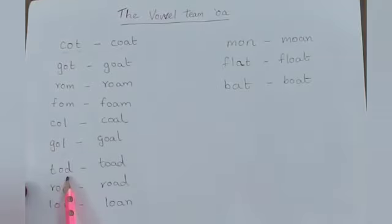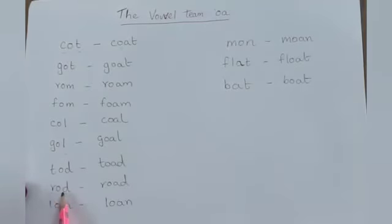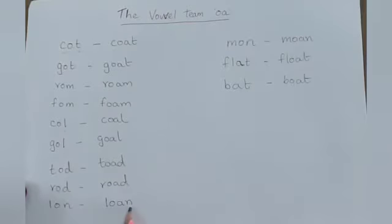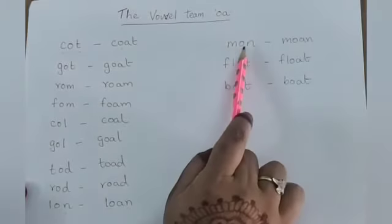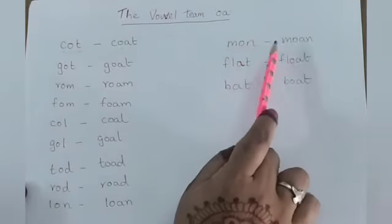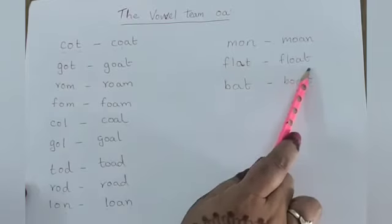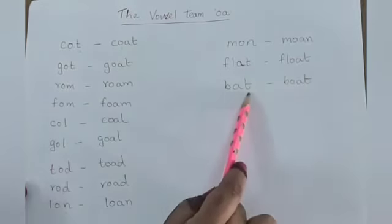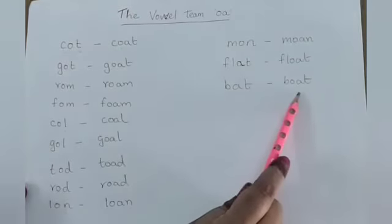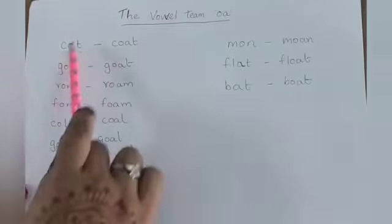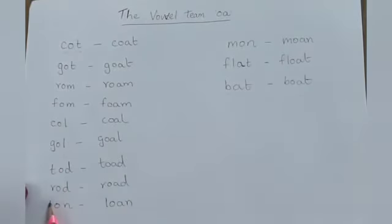T-O-A-D — toad. R-O-A-D — road. L-O-A-N — loan. M-O-A-N — moan. F-L-O-T — float, F-L-O-A-T — float. B-A-T — bat, B-O-A-T — boat. So these are the words with the letters O and A.